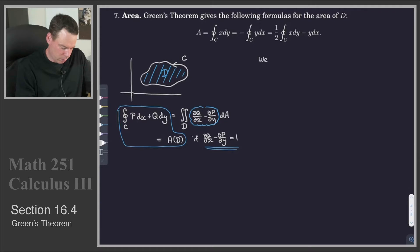So we want to choose P and Q such that dQ/dx minus dP/dy is 1.